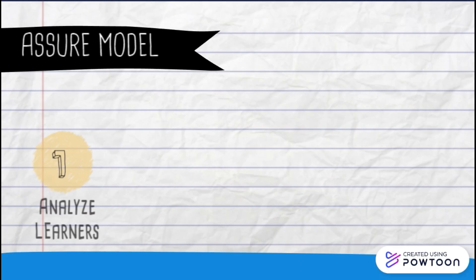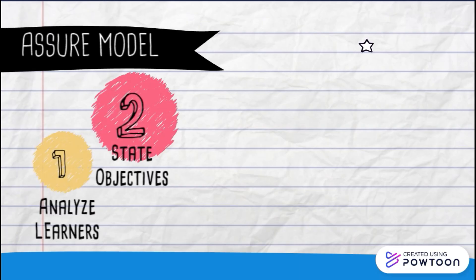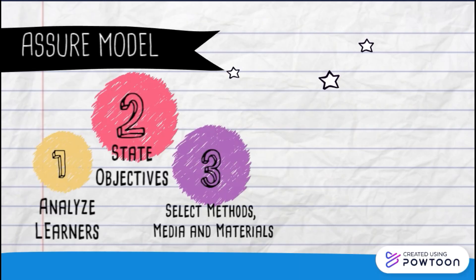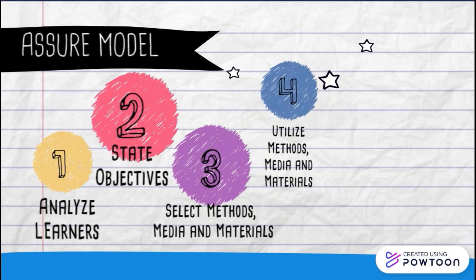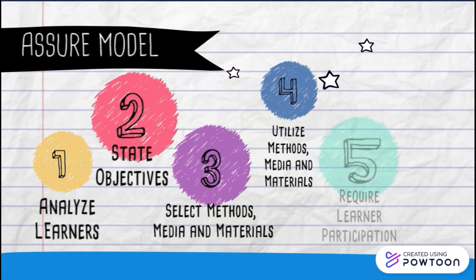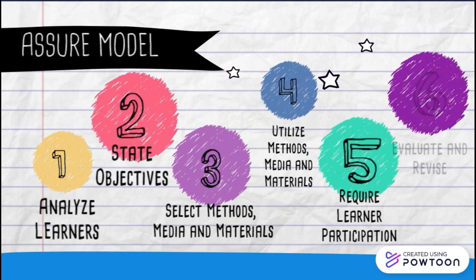A for Analyze Learners, S for State Objectives, S for Select Methods, Media, and Materials, U for Utilize Methods, Media, and Materials, R for Require Learner Participation, and E for Evaluate and Revise. Let's take a look at each in detail.